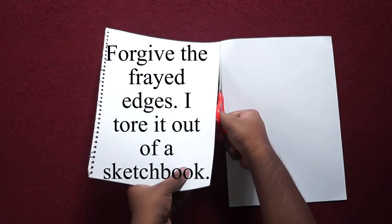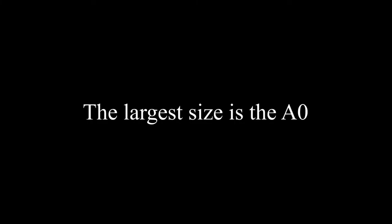The way the ISO standard has been created also means that an A4 paper is basically an A3 paper cut in half, which is an A2 paper cut in half, and so on. The largest size is the A0, which has another interesting property.